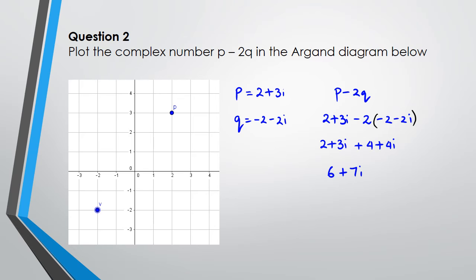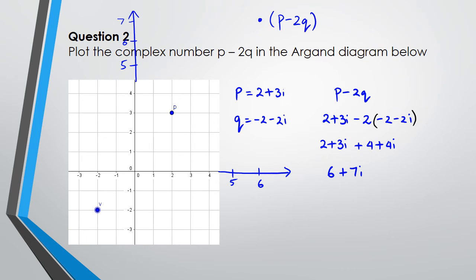I just realized my grid is actually way too small for 6 plus 7i. Going along the real axis — about 5, 6 — and going up: 4, 5, 6, 7. So p minus 2q is plotted at that point. It would have helped if I'd done this question beforehand, but that's how you do it: 6 plus 7i.